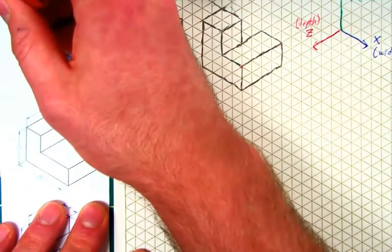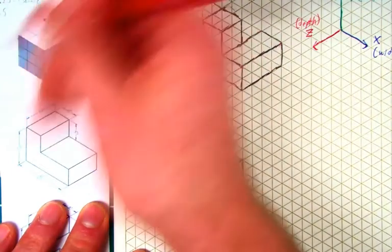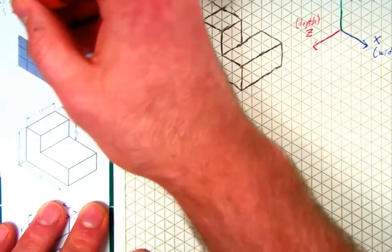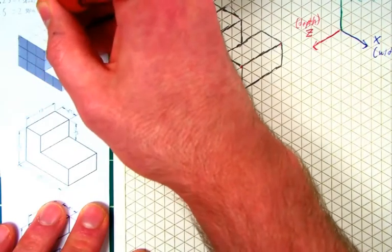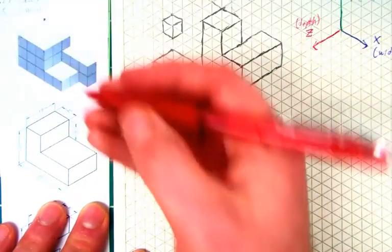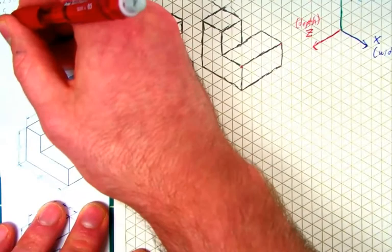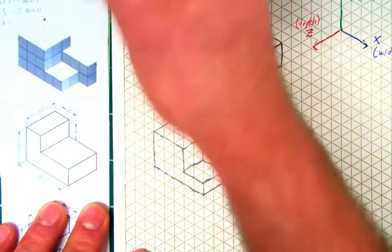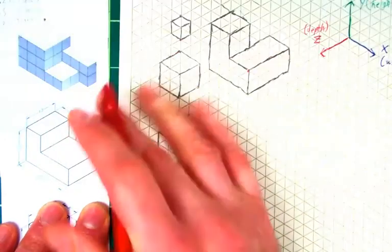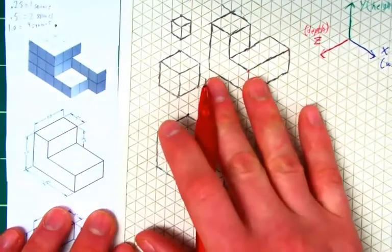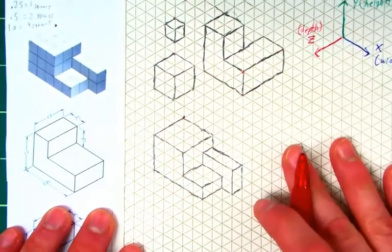We'll say 0.25 equals one square. And so therefore 0.5 equals two squares because that would be twice as many. And if we say one or 1.0, that would of course be four squares as well. Just in case you haven't made that note for yourself, you can go ahead and add that now.